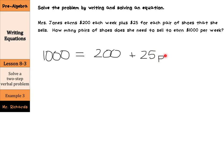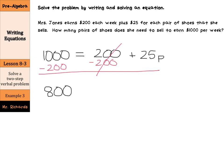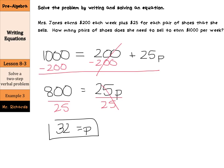Let's solve this equation. Subtract $200 from both sides — that cancels, leaving $800 on the left equals $25 times P on the right. Now divide by $25 to get our variable P alone. So she needs to sell 32 pairs of shoes in order to earn $1,000 per week. Anything more than that is great, but 32 to get the $1,000. That is it for this lesson — good luck.